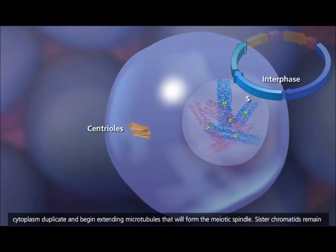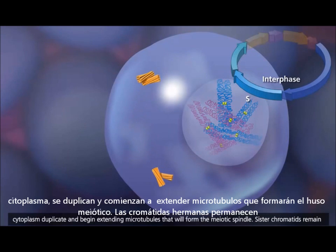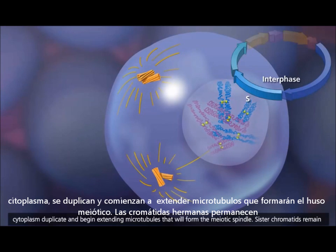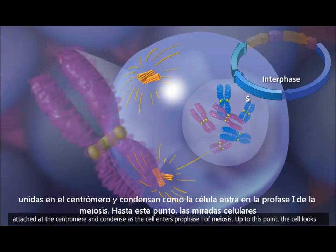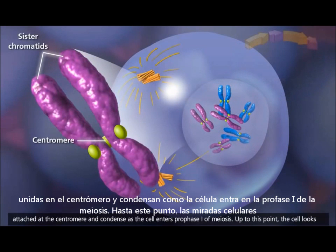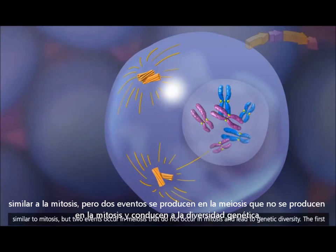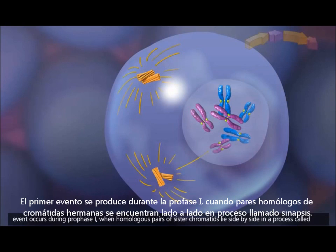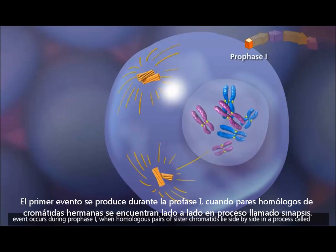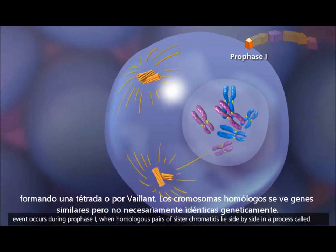The paired centrioles in the cytoplasm duplicate and begin extending microtubules that will form the meiotic spindle. Sister chromatids remain attached at the centromere and condense as the cell enters prophase I of meiosis. Up to this point the cell looks similar to mitosis, but two events occur in meiosis that do not occur in mitosis and lead to genetic diversity. The first event occurs during prophase I, when homologous pairs of sister chromatids lie side by side in a process called synapsis, forming a tetrad or bivalent.